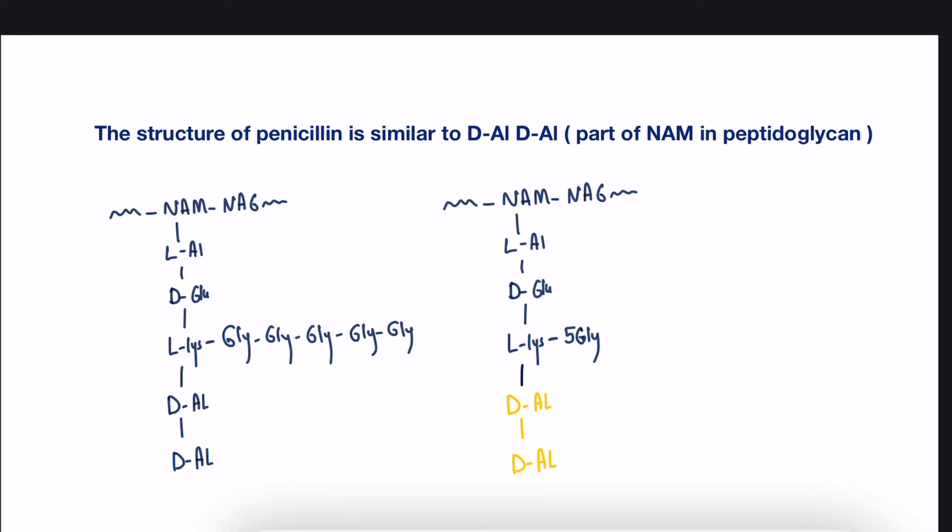What actually makes the penicillin able to bind to the transamidase is the unique thing about it shows similarity in structure to D-alanine-D-alanine part in the NAM. So, let's see here one chain of peptidoglycan. In this chain, we have the NAM that has multiple amino acids.